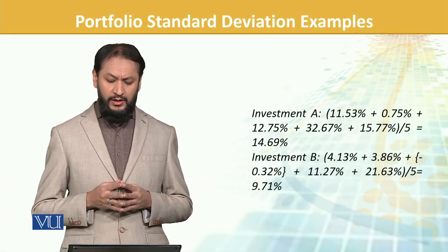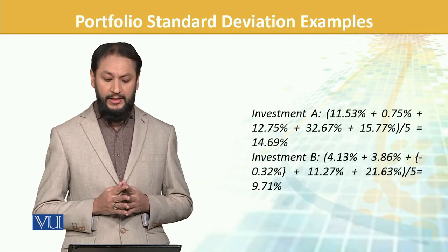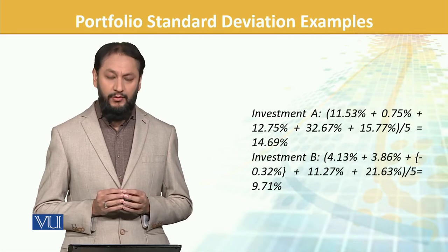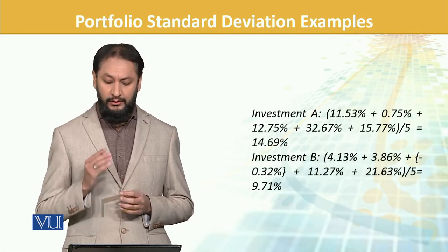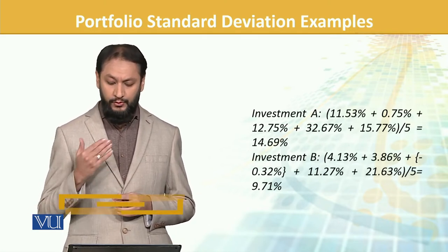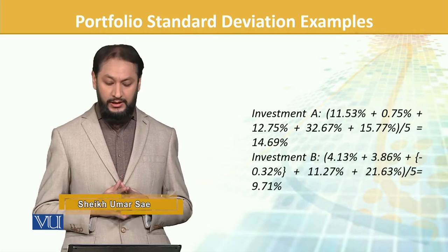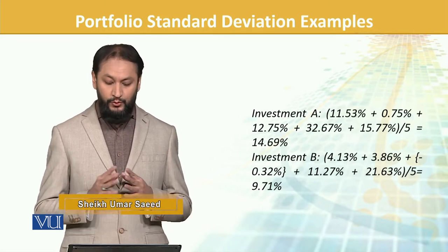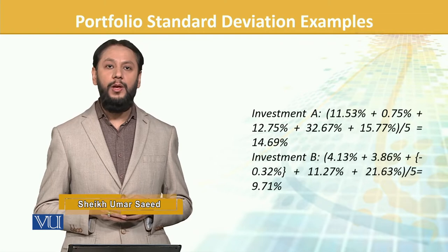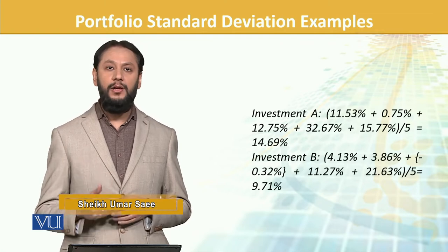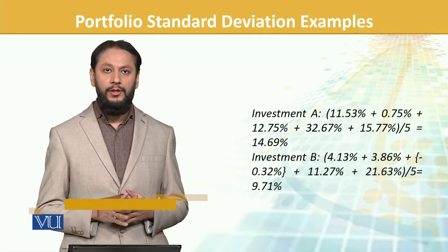For Investment A, we have returns available. That is 11.5, 3.7 — returns for different periods are given to us. So we should be able to calculate the standard deviation of these returns.